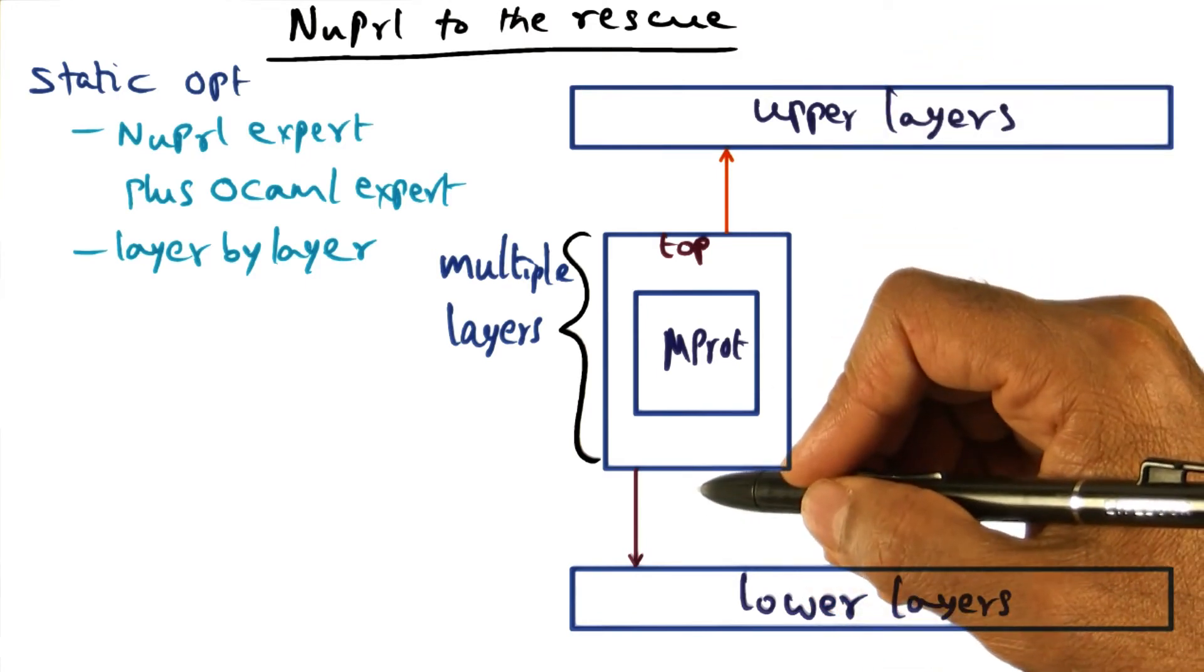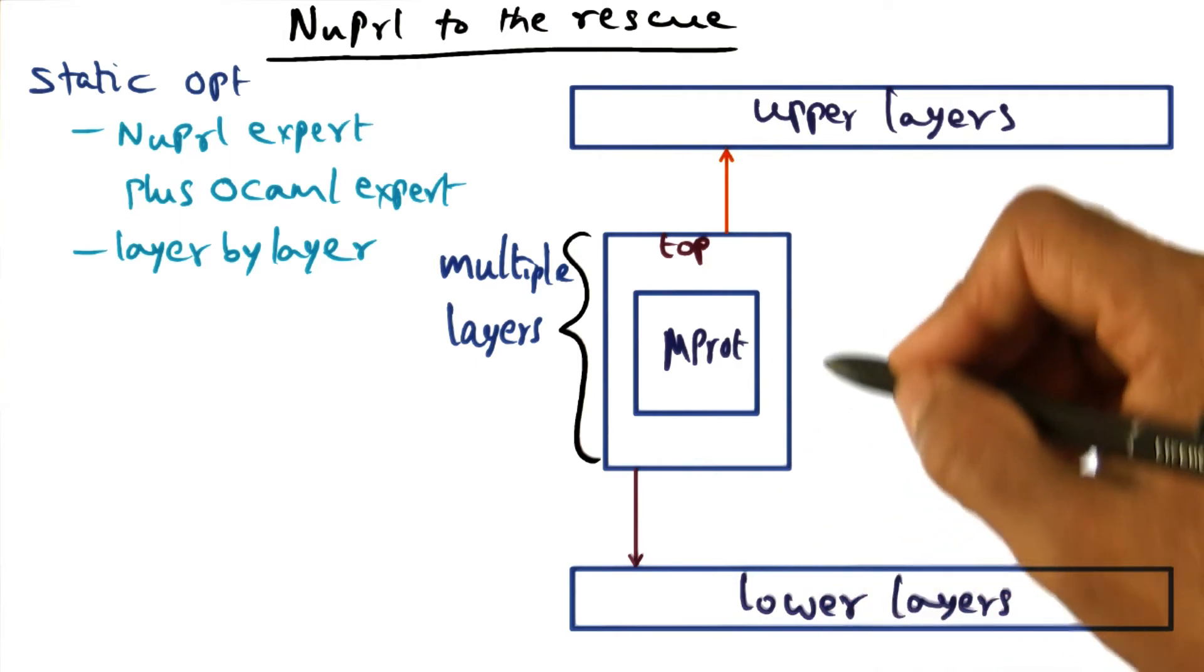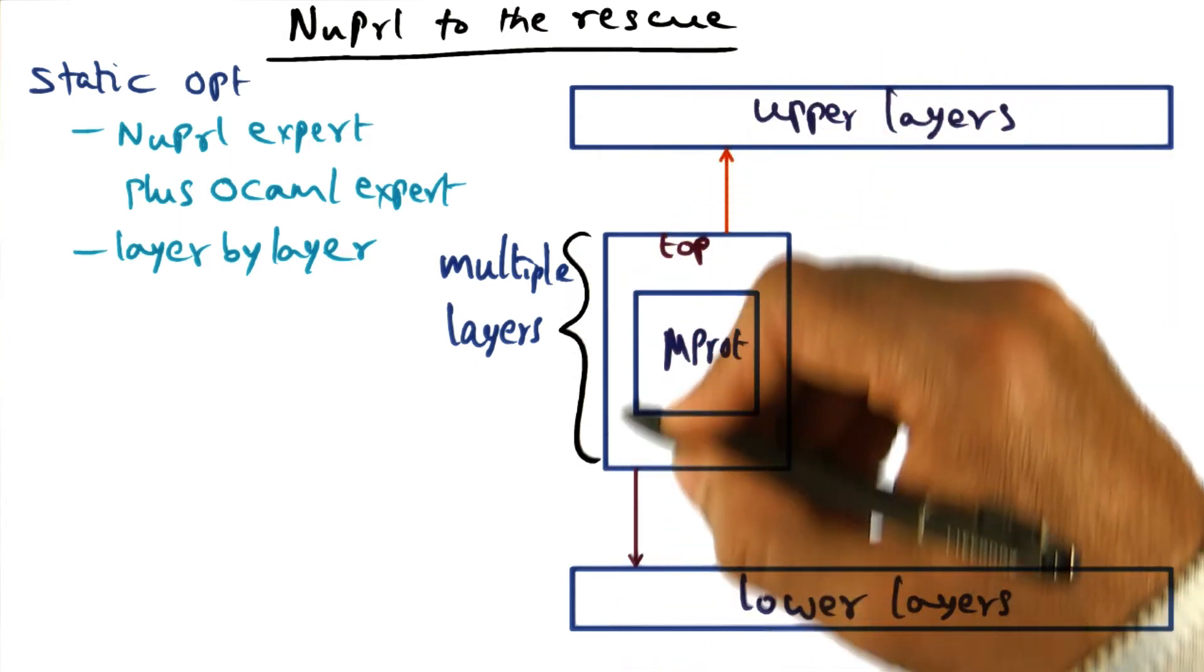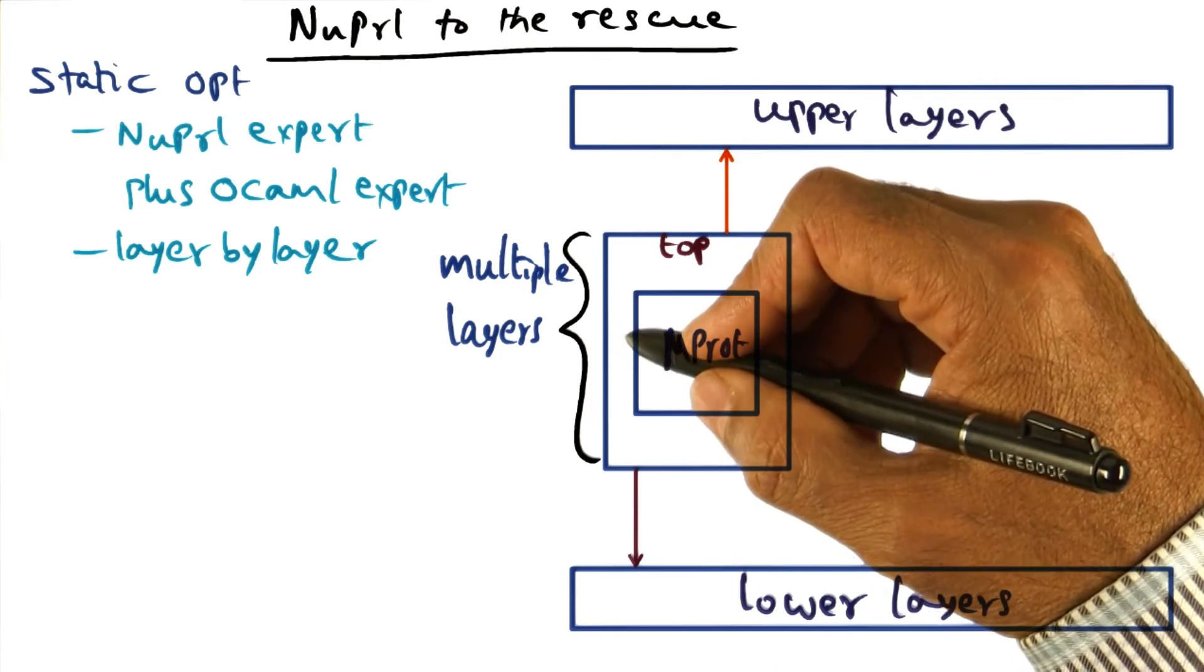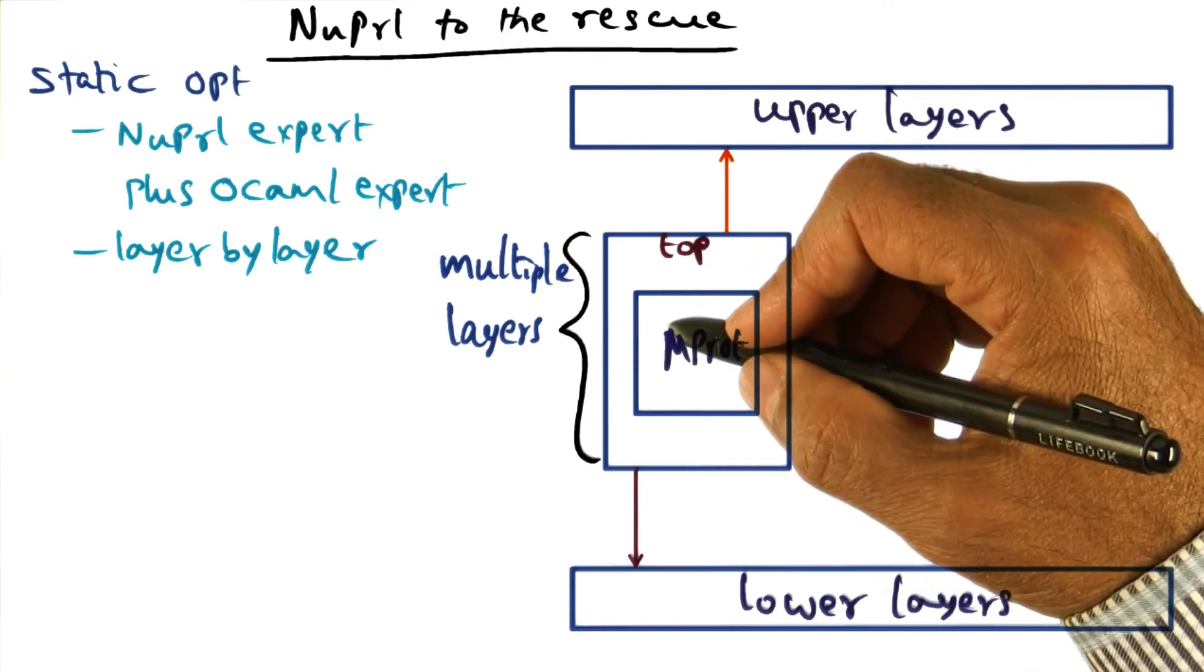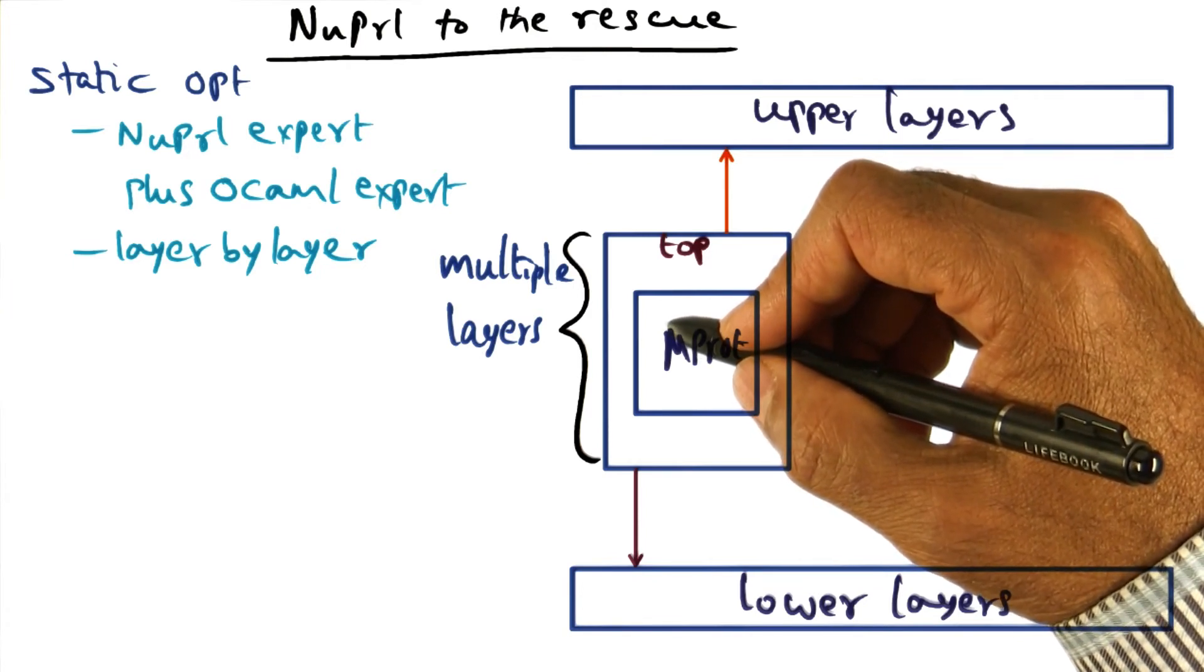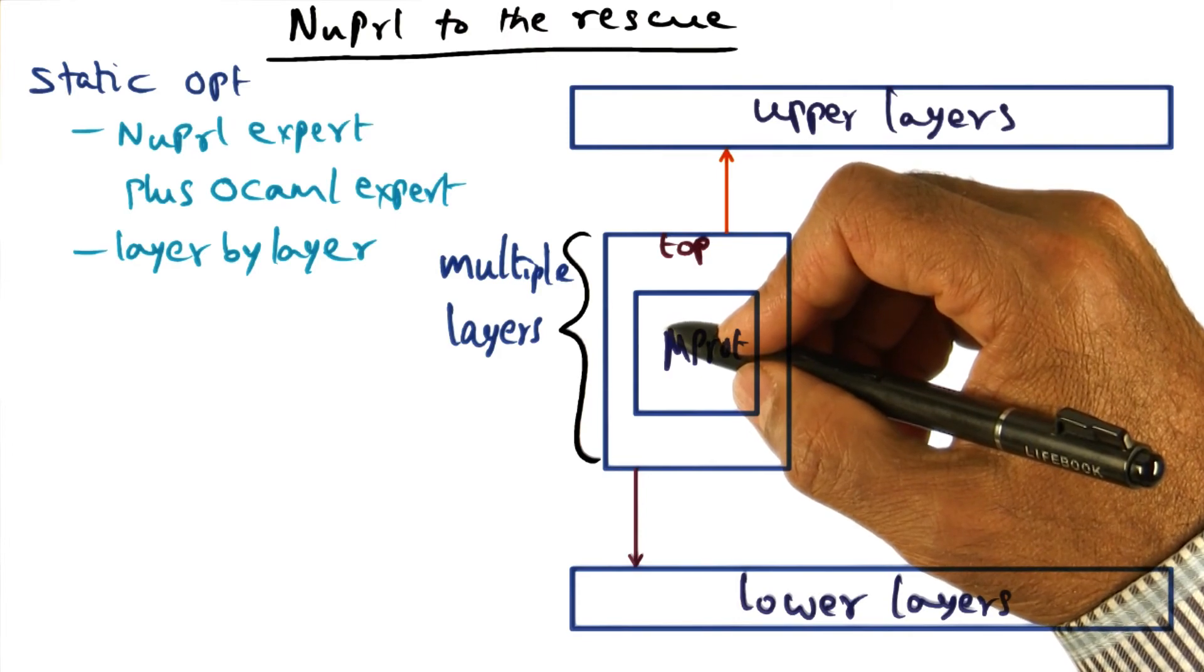And what we want to be able to do is, if possible, collapse all these layers. Because when we go through these multiple layers, we're adding latency to the overall processing of any message. And this is where we are going to turn to the power of the NewPearl theorem proving framework.